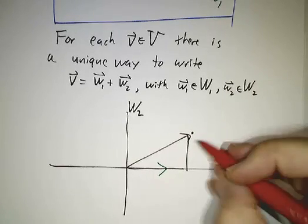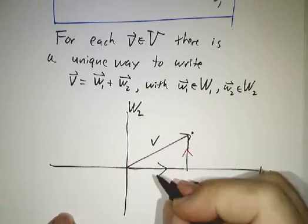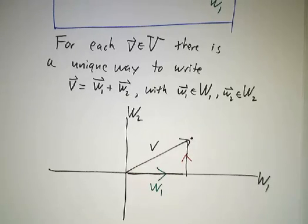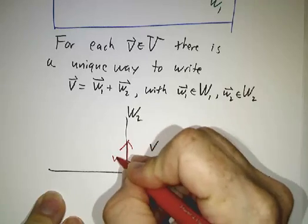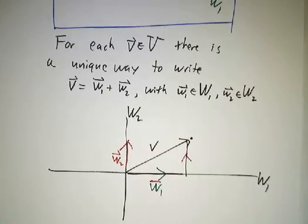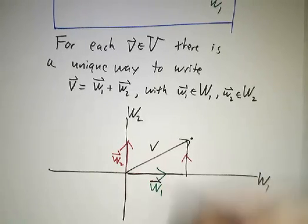One piece, so this is our vector v, and v can be written as a sum of w1 and w2. Got to get my colors straight.